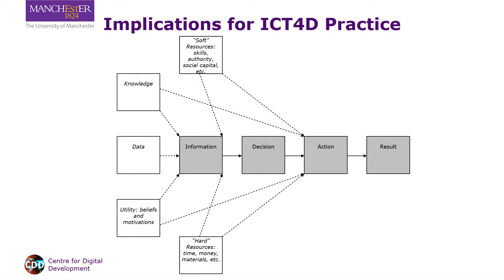One practical implication of all this is that ICT4D initiatives must take a holistic approach. They can't simply deliver the technology and stand back, but must also attend to all of the other resources that have to be in place for the information value chain to fully run. Is the necessary data content available and appropriate? Have skills, knowledge, and authority been provided? Do those involved have enough money to participate as intended? Will users be motivated to participate?